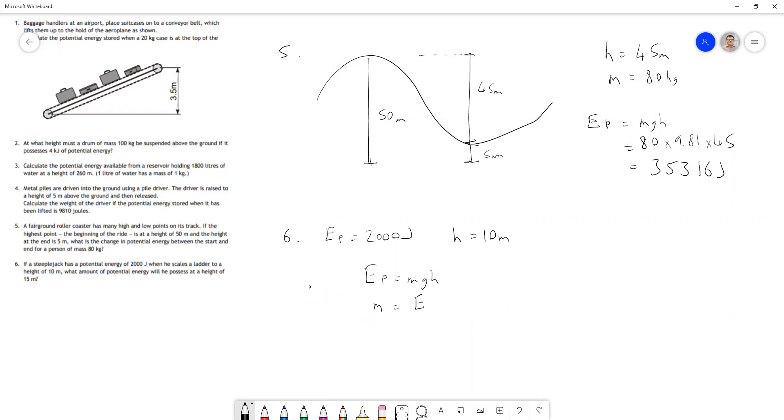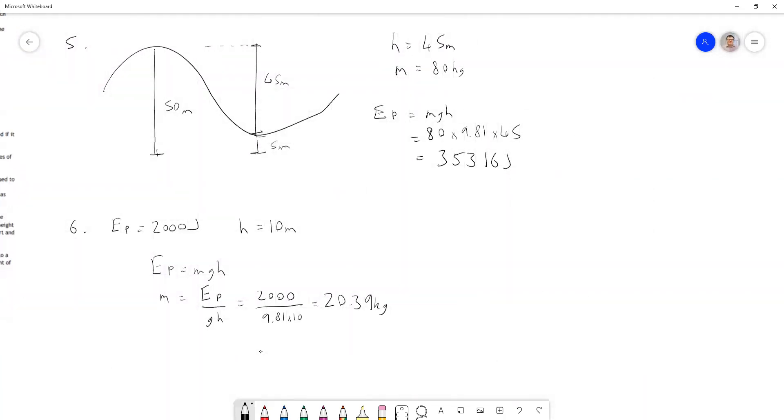That trick might be harder to spot, so let's work out the mass first, then calculate the new potential energy. Mass equals 2000 divided by (9.81 times 10), which equals 20.39 kilograms. This question gives a ridiculously light steeplejack, making them a child in this case, but we'll pretend it's not nonsense and use it anyway. At a height of 15 meters, energy equals mass times gravitational acceleration times height: 20.39 times 9.81 times 15.